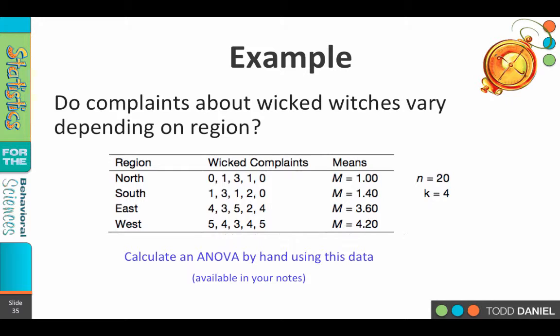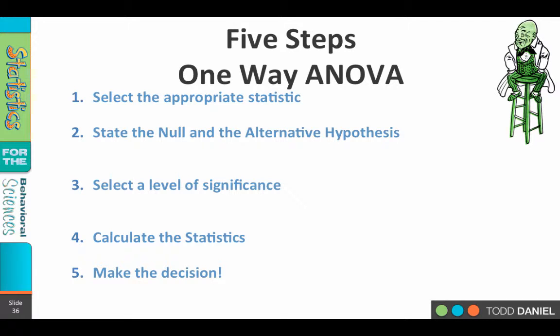But even if it did we could still look at those means. We see the means for regions in the North and the South are 1 and 1.4. In the East and the West the means are 3.6 and 4.2. So what do we have going on here? Let's do an ANOVA to find out. We need to remember that our n, our total sample size is 20, and our k is 4. We have four regions, and let's calculate our ANOVA.